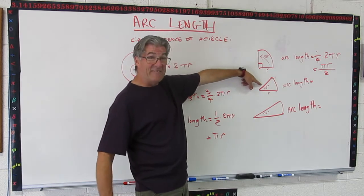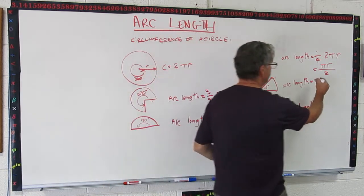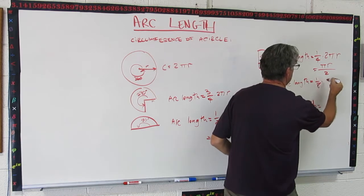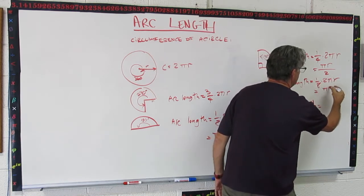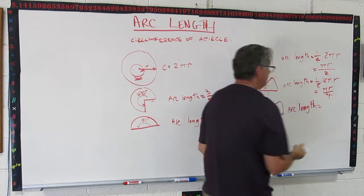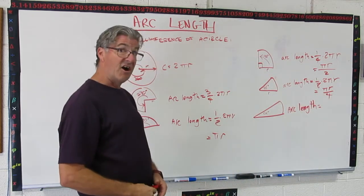Let's take a look at that one. 45 is one eighth of the way around a circle. So this is going to be 1/8 times 2πr, which reduces down to πr/4. That's one quarter πr.